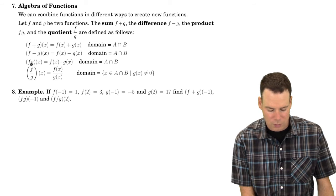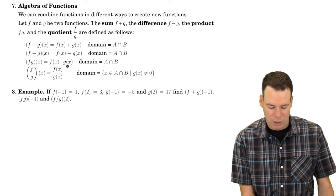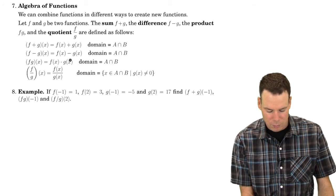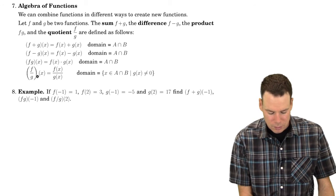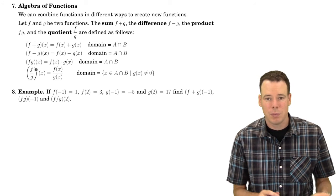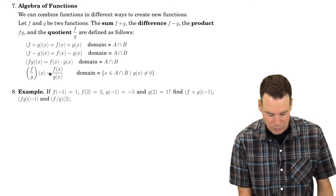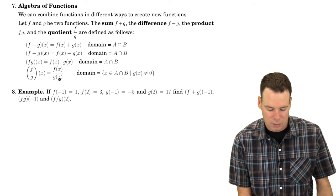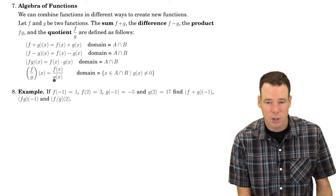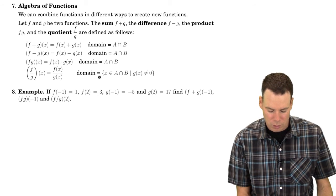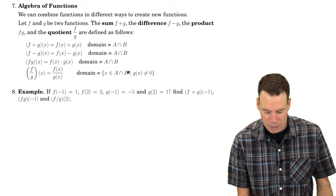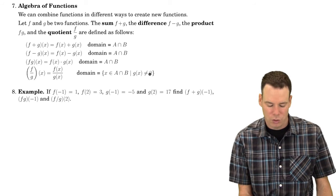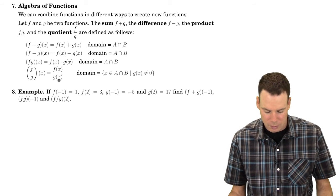The product is defined to be the product of the corresponding outputs — so the product of f and g at x is f of x multiplied by g of x. When we define the quotient of two functions we need to be careful: f divided by g evaluated at x is f of x divided by g of x. This only works when g of x is not zero. So the domain is the intersection of the domains of f and g, with all points where g equals zero removed, since it doesn't make sense to divide by zero.